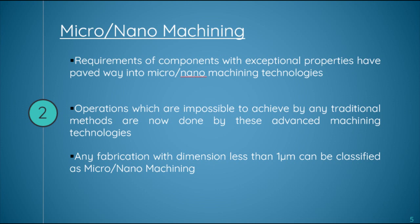Traditional finishing processes (TFPs) have many constraints with reference to the size and shape of parts that can be finished, the surface integrity of the finished parts, and the level to which surface finish can be achieved. To overcome these constraints, advanced finishing processes (AFPs) have been developed to the extent that they can be used on the shop floor of medium and large scale industries.